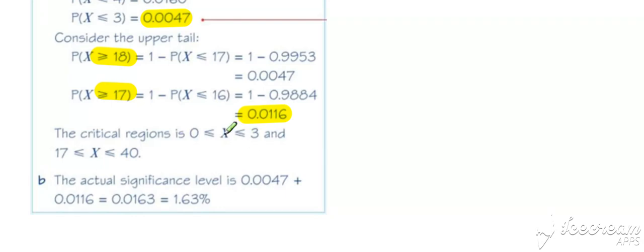So the critical regions are less than or equal to 3, or we could write it as between 0 and 3, and at the upper end, greater than or equal to 17, or between 17 and 40 for this binomial. So that's your critical region.